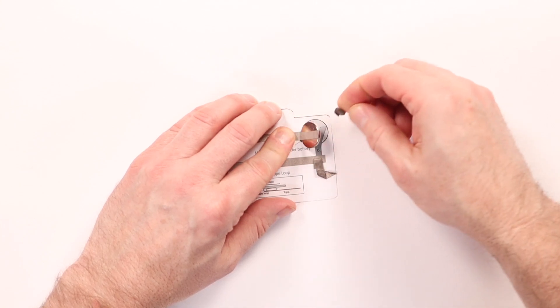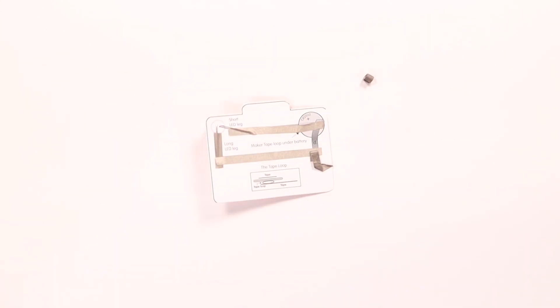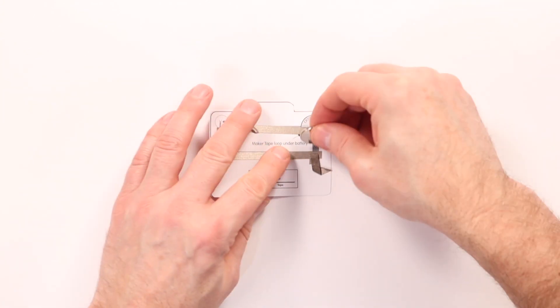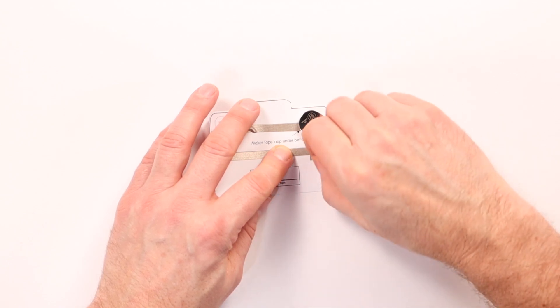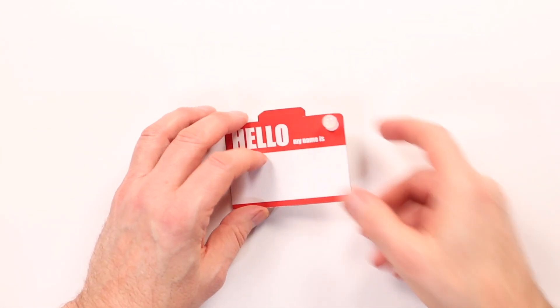There's a tape loop there. We're going to pull that off. And let's run that tape down so we can put our tape loop on top. Then the battery. And then that last piece, D. And that should light up.